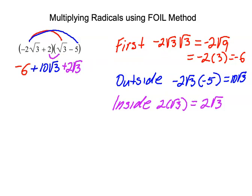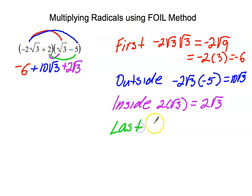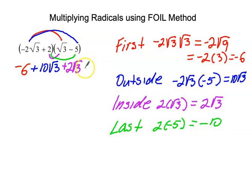The L stands for last term. We have two times negative five, which equals negative ten. So we add negative ten to the rest of the expression.